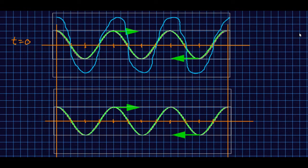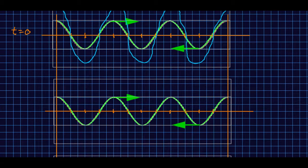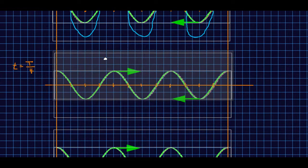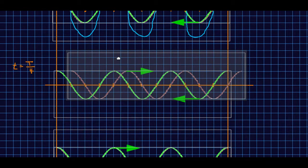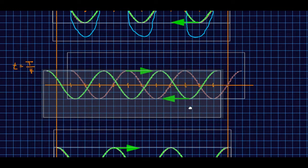Now if we go ahead by a quarter of a period. Remember that in a full period the wave travels a distance equal to the wavelength. So in a quarter period it has to travel a quarter of the wavelength. I'm going to move it a quarter of a wavelength this way and similarly I have to move the other wave a quarter of a wavelength the other way, like so.